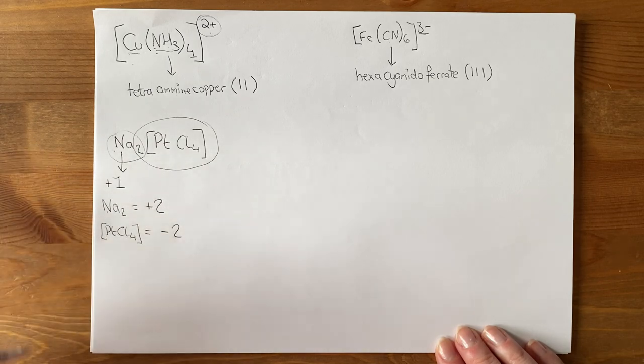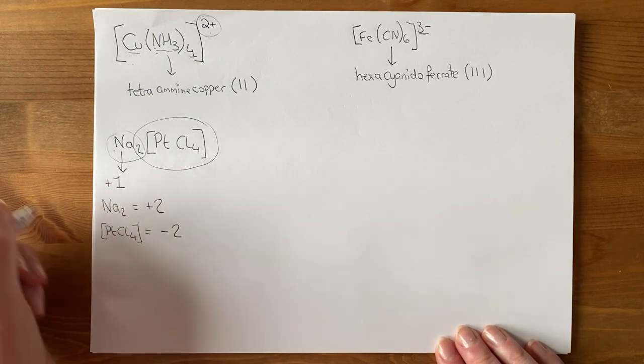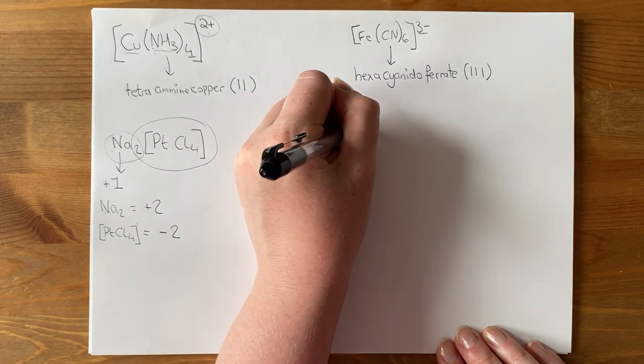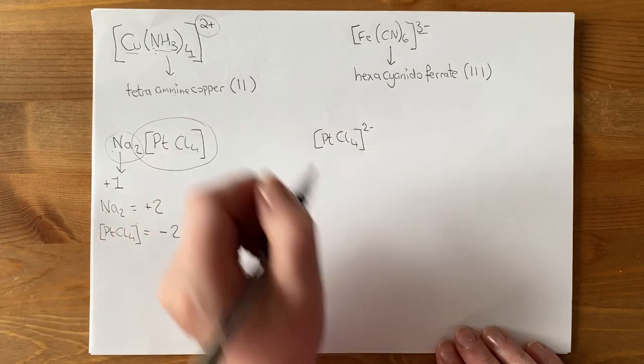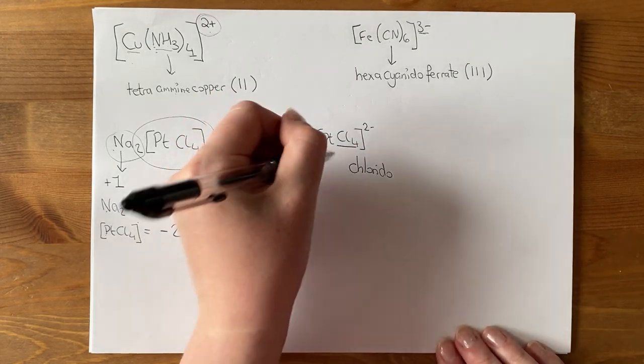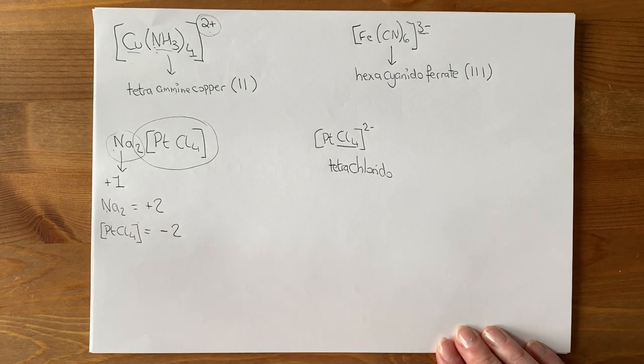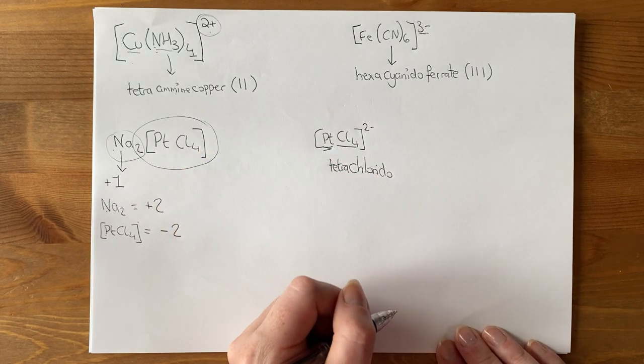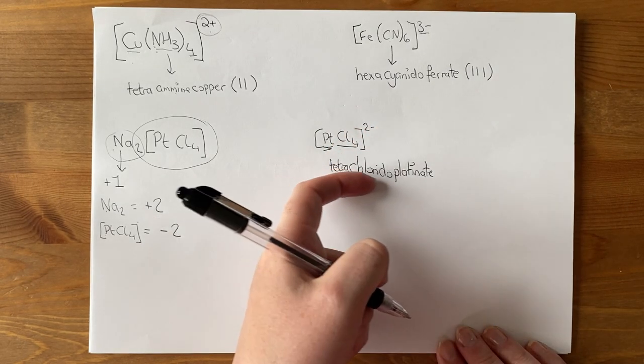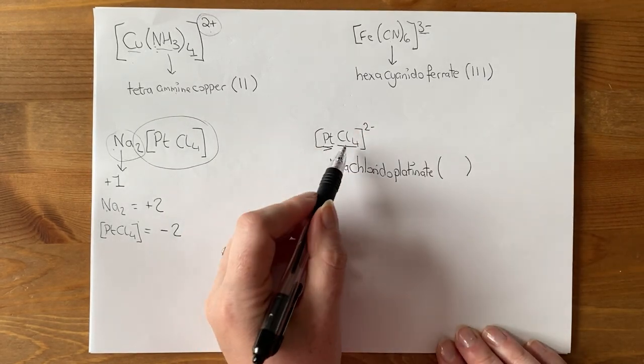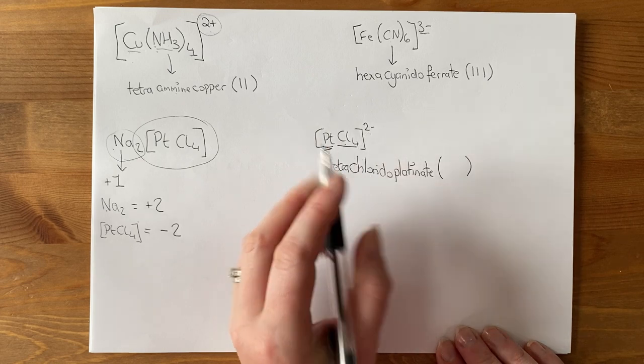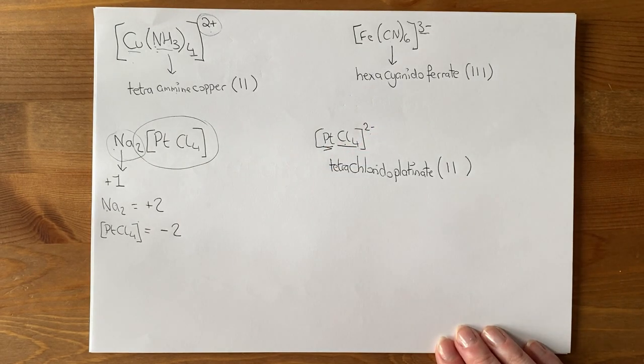Plus 2 coming from this, so this must be minus 2. So now let's have a look at this with this being platinum, 4 chlorines. But this must be 2 minus to balance my two positive charges. So I have chlorido ligands. I have 4 of them, so tetrachlorido. It's platinum, but it's negative, so it becomes platinate. Each one of these is negative, there are 4 minuses. Overall, this is 2 minus, so platinum, going from 4 minus up to 2 minus, must be plus 2.